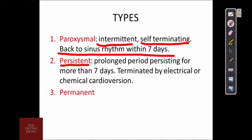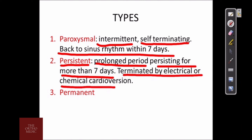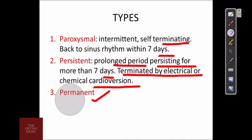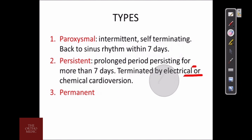Persistent is due to a prolonged period persisting for more than seven days, terminated by electrical or chemical cardioversion. The third type is permanent. These are the types of atrial fibrillation.